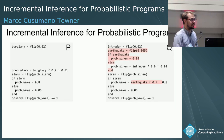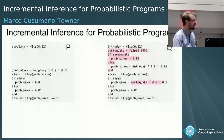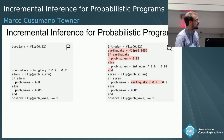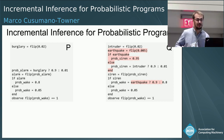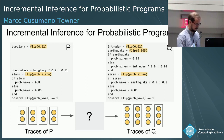Here are two programs: P on the left and Q on the right. They are related — Q uses the name 'intruder' where P uses 'burglary', 'siren' where P uses 'alarm', and Q introduces a new random choice called 'earthquake'. Earthquake, if it's 1, changes the probability of other random choices, but if it's 0, the probabilities don't really change. Earthquake is a very low probability event at 0.005. The question is: can we convert samples from P directly into samples for Q?